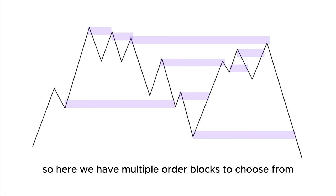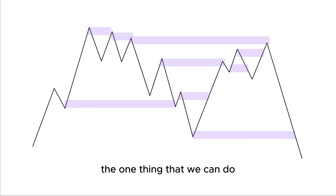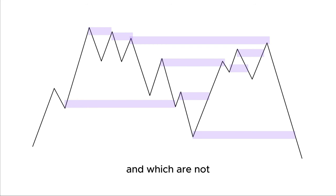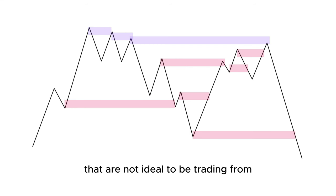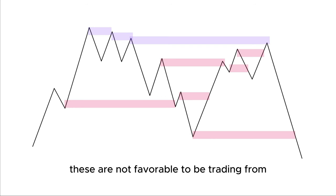Here we have multiple order blocks to choose from, but one thing we can do is start to narrow down which order blocks are more favourable and which are not. Here you can see I have selected a few order blocks, marked in red, that are not ideal to be trading from. As we progress, we will explain why these are not favourable to be trading from.